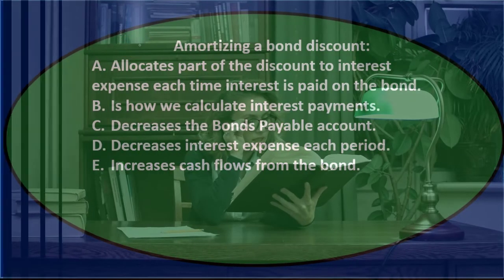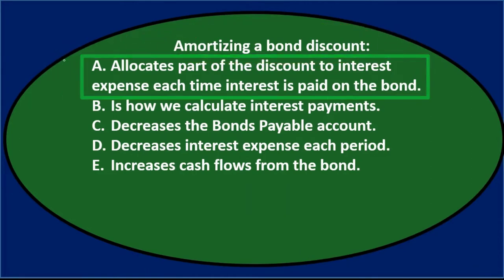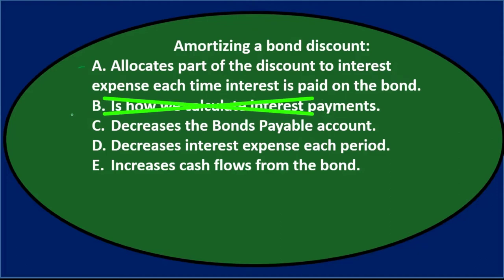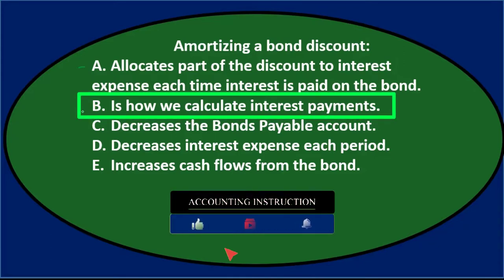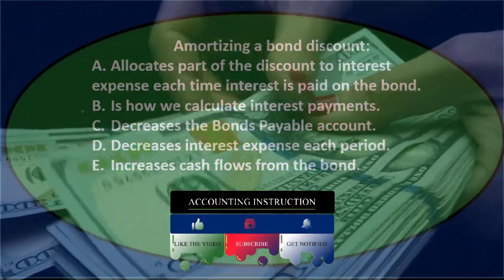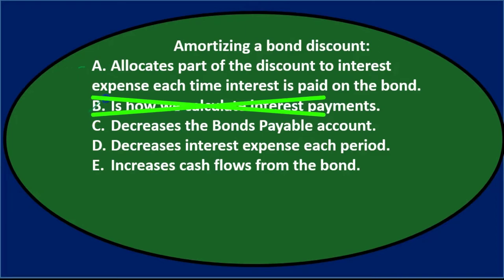Using process of elimination: A — allocates part of the discount to interest expense each time interest is paid — sounds reasonable, I'll keep A. B says it's how we calculate interest payments, but the bond discount doesn't determine the payments we make; those are based on the bond face amount. The discount will influence interest expense we record, but not the actual cash payments, so it's not B.